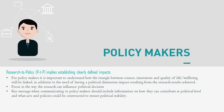For policy makers — what we call research-to-policy — this implies establishing clear and defined impacts. Policy makers want to understand the triangle between science, innovation, and quality of life. They want the political dimension and the impact resulting from our research. The key message when communicating to policy makers should include how our research can contribute to their political implementation. We created three levels: policy makers at European level, national level, and local level, because they have different objectives.